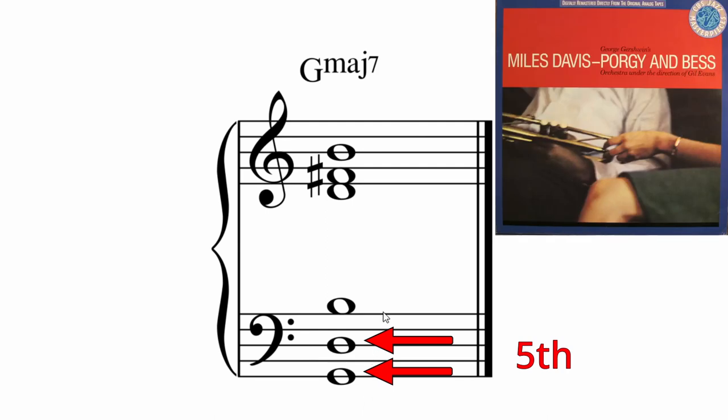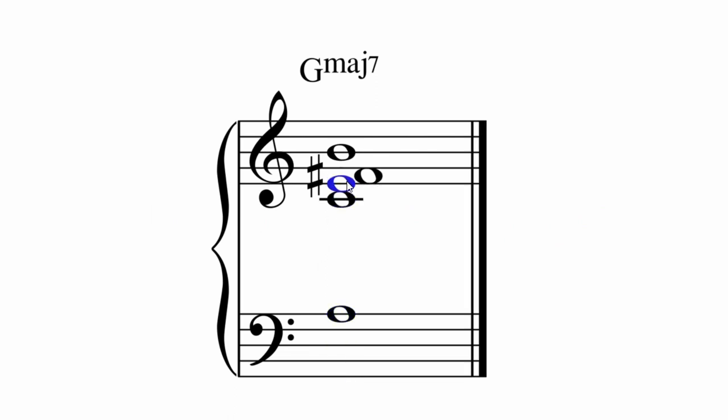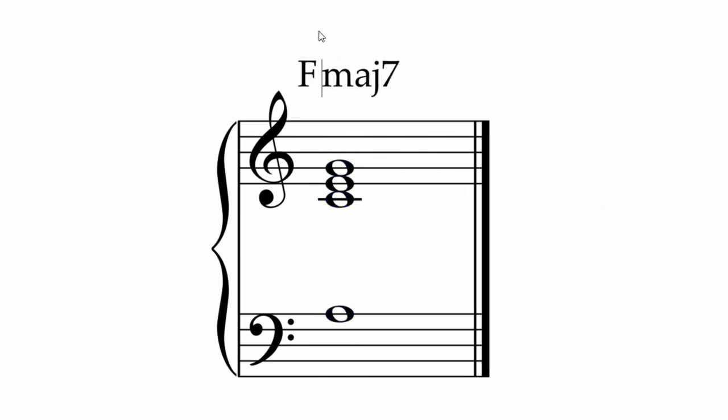It's common with four note voicings to leave the root out as well, just like you might if you were playing the piano. This would be an F maj9 without the root. The rhythm section will be marked with F maj7. Voicings like that are really common.